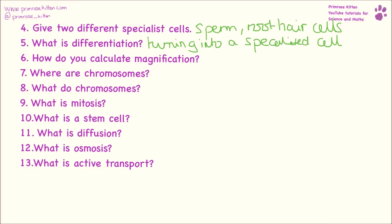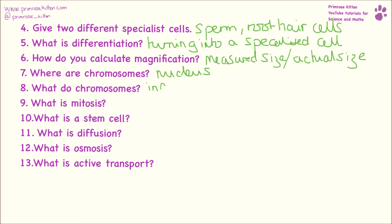How do you calculate magnification? This is the measured size. Where are chromosomes? They are in the nucleus — that is of plant cells and animal cells, but not in bacterial cells because they are all over the place. Chromosomes provide the information, or the instructions, for a cell — what a cell needs to do.